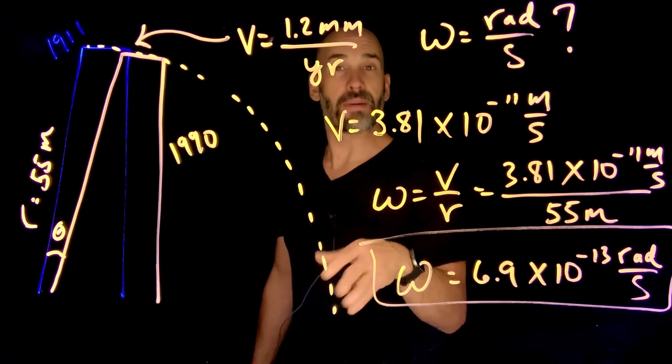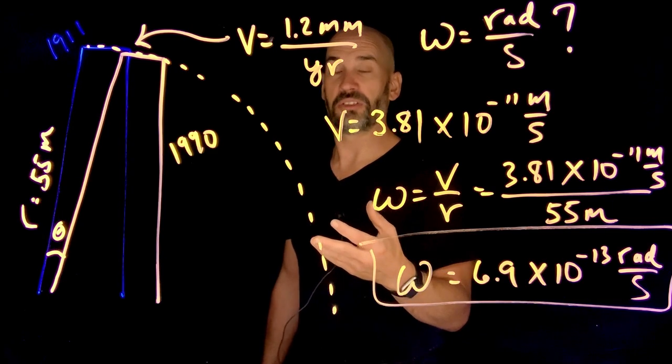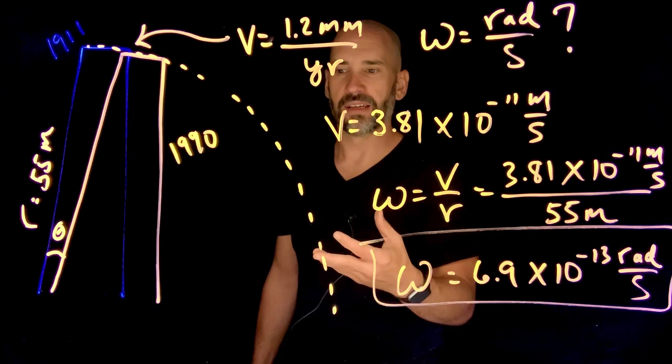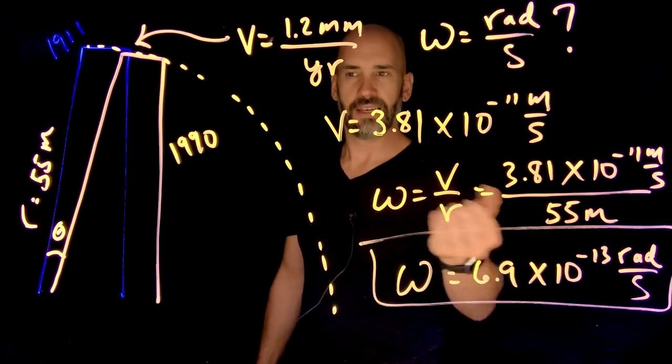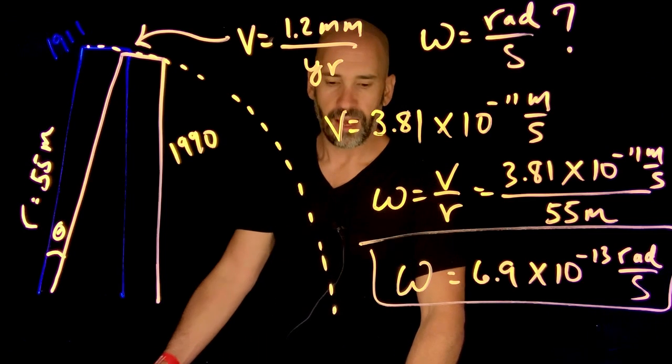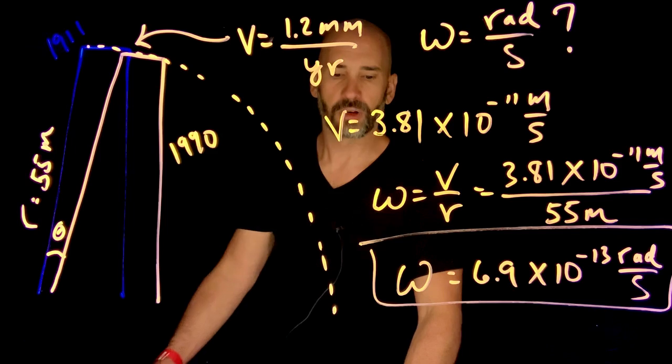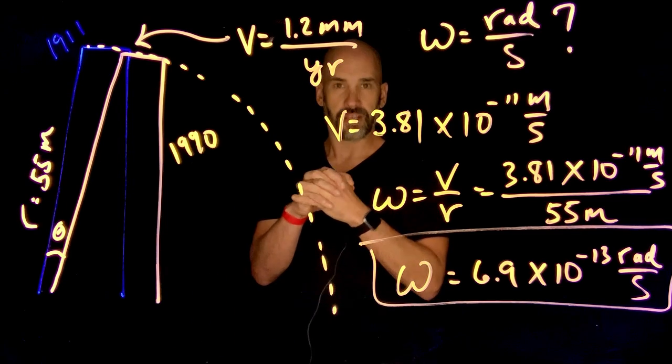It's kind of interesting. Time has an ability to kind of trick us sometimes into thinking that things are frozen, things are not really moving, but sometimes it's just so slow that we can't see it. And that's the case with the Leaning Tower of Pisa. Okay. When we get back, we're going to talk about a few other rotational concepts and I'll see you there.